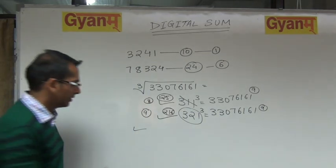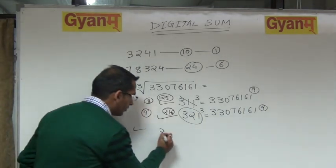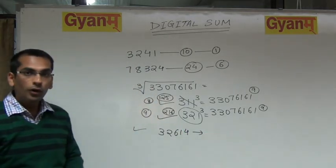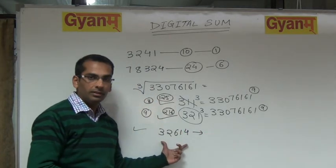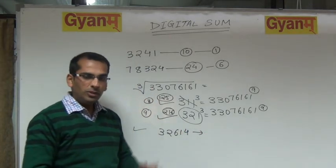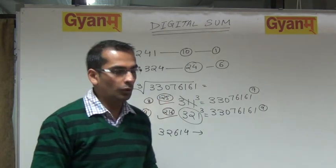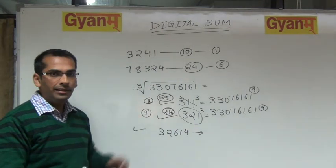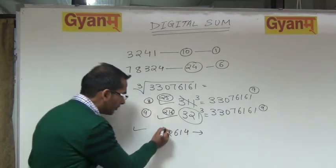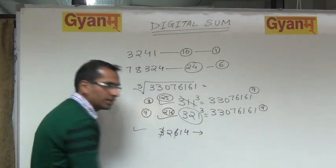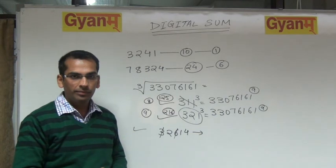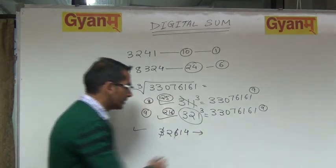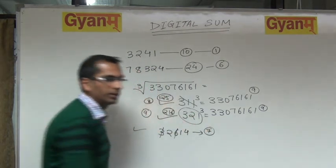We want to find the digital sum. Let us take some examples. Consider 3, 2, 6, 1, 4. Can you see any 9 in this number? No. But can you see 9 indirectly? Yes — 3 plus 6 is 9. Just ignore it. You are left with 4 plus 2 is 6, plus 1 is 7. So 7 is the digital sum of this number.